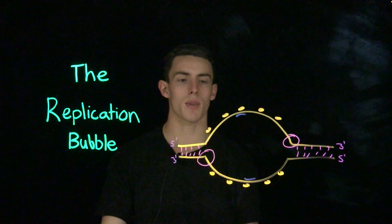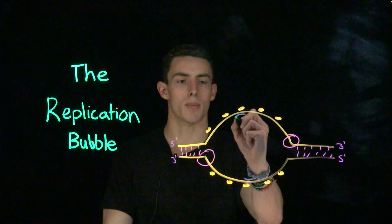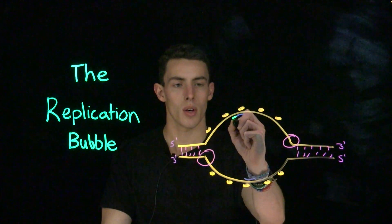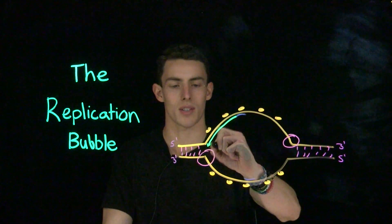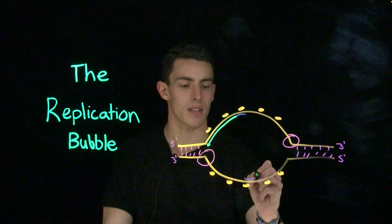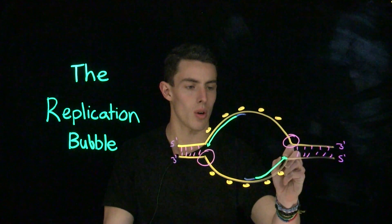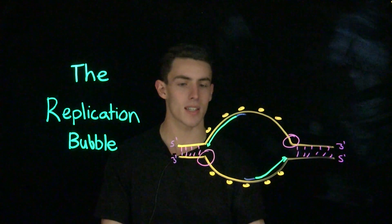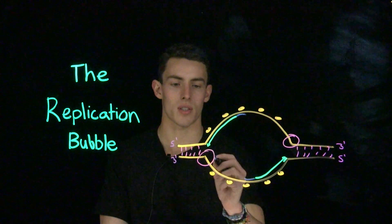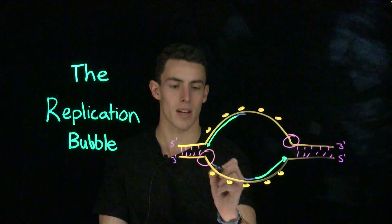We have two types of replication in a replication bubble. We can have continuous replication as seen on the leading strand, or we can have discontinuous replication as seen on the lagging strand.